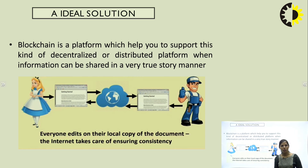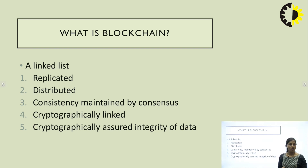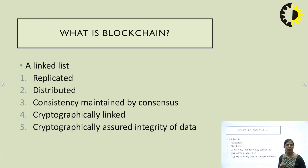For updates, we require consistency and integrity, and no one can easily change the data — after verification only can the data be edited. This is the ideal solution provided by the decentralized system. The different terminologies used in blockchain are: replicated, distributed environment, consensus algorithm for consistency, and cryptographic linking.